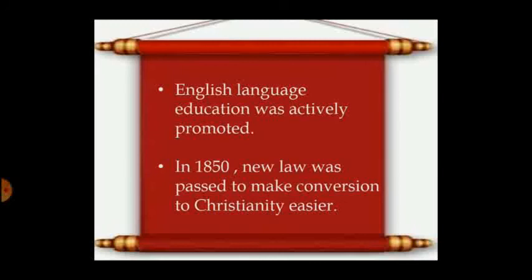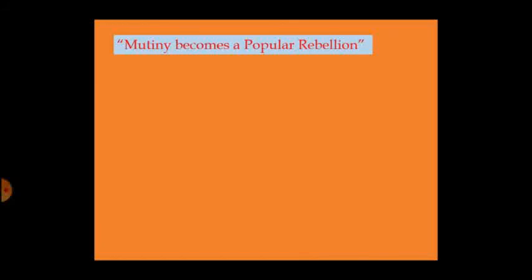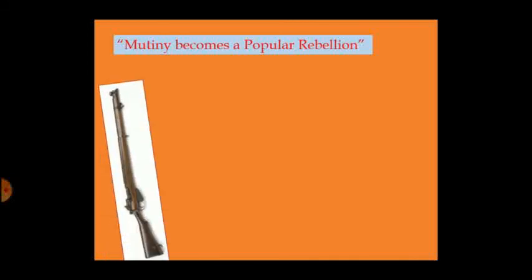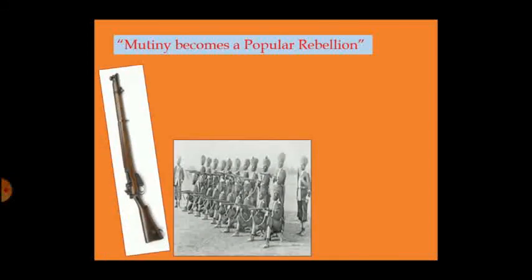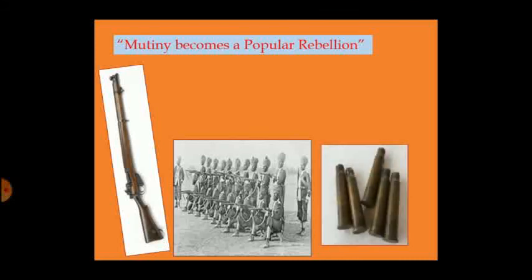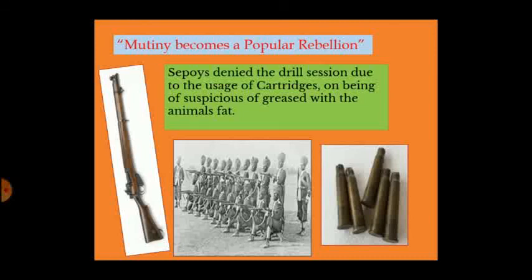Now let us understand the immediate cause of the Revolt of 1857. A rifle named the Enfield was introduced, and the sepoys were supposed to use it. A rumor spread that the cartridges of the rifle were greased using animal fat. The sepoys needed to tear the wrapper using their teeth, so they refused to use it as their religious beliefs were being hurt. The sepoys mutinied in several places, beginning from Meerut. Anger against high taxes, disruption of crafts and trade, dissatisfaction of nobles, and rumors about the cartridges finally led to the mutiny of 1857.